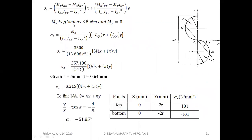Substitute Ixx, Iyy, Ixy into the sigma_z expression with Mx given and My = 0. After substituting the numerical r and t values, the final expression is obtained. At the top (x = 0, y = 2r), sigma_z = +101 N/mm² (tension); at the bottom (x = 0, y = −2r), sigma_z = −101 N/mm² (compression).